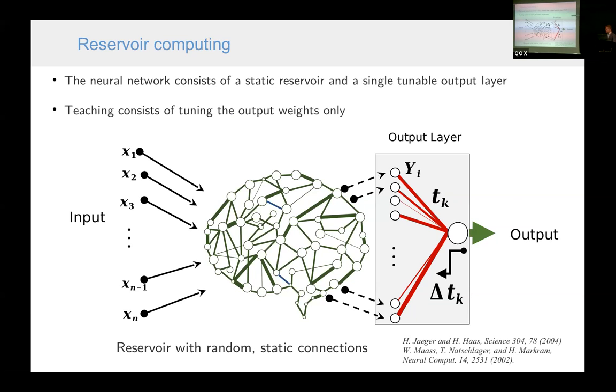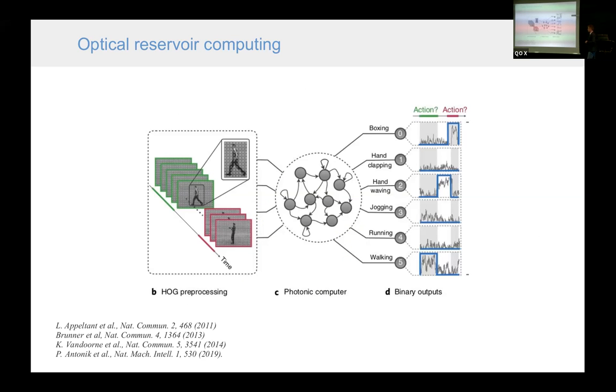And another approach to neural networks is based on reservoir computing. Reservoir computing is a type of architecture of a neural network in which a large part of neurons are static and usually connected in a random way. If we are teaching the network, these connections are not changed. This is completely static. The only thing that is tuned during teaching is the output layer. And the advantage of this scheme is that we don't need to tune anything in this part, so we can use a system which is not tunable. And teaching is very simple because if we have only one layer, we can use a linear regression to perform the teaching. We don't need any advanced algorithms.